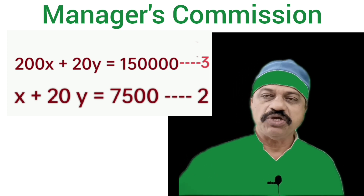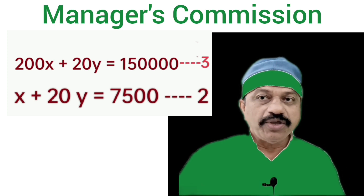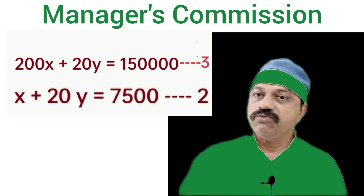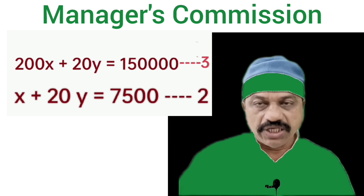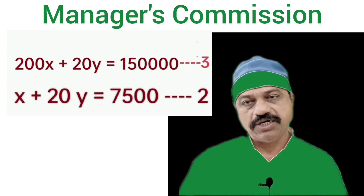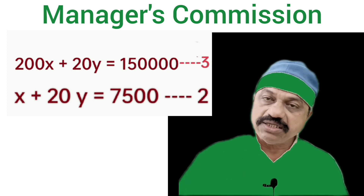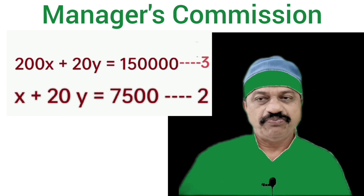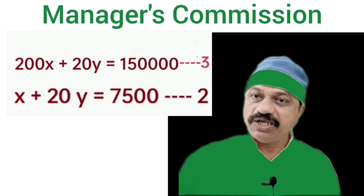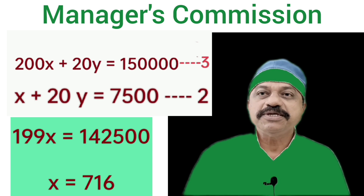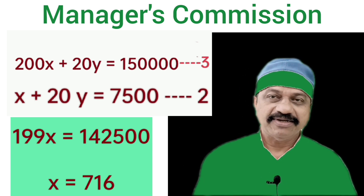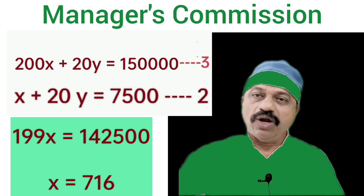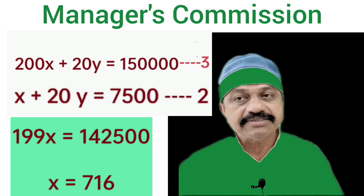We can name this as equation number 3. Then we deduct equation 2 from equation 3. Equation 3 is: 200x plus 20y = 1,50,000. And equation 2 is: x plus 20y = 7,500. Here, in both equations, the value of y is 20y. Therefore, when deducting one equation from the other, the value of y will become 0. When we deduct equation 2 from equation 3, we get 199x = 1,42,500. Therefore, x = 1,42,500 divided by 199, which gives the answer 716.